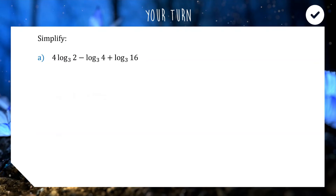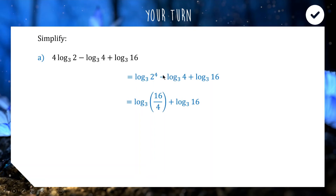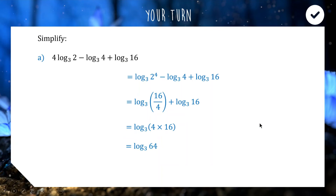For question a, all bases are 3. The issue is we have a number out the front, so we put the 4 up as the power of 2 using the blogger property, giving log base 3 of 2 to the 4. We then subtract two logarithms with the same base, so we combine as a division: 2 to the power of 4 is 16, divided by 4 gives 4. Then combining the remaining two logarithms by multiplying subjects, we get log base 3 of 4 times 16, which is log base 3 of 64.